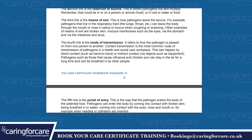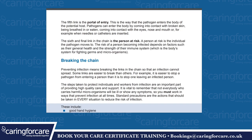The fourth link is the mode of transmission — it refers to how the pathogen is passed from one person to another. Contact transmission is the most common route in health and social care workplaces. This can happen by direct contact such as hand to hand, or indirect contact via objects such as equipment. Pathogens such as those that cause influenza and chicken pox can stay in the air for a long time and be breathed in by other people. The fifth link is the portal of entry — this is the way the pathogen enters the body of the potential host. Pathogens can enter by coming into contact with broken skin, being breathed in or eaten, coming into contact with the eyes, nose and mouth, or when needles or catheters are inserted.